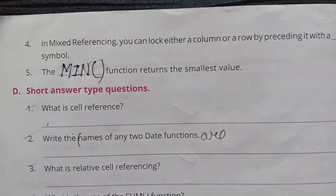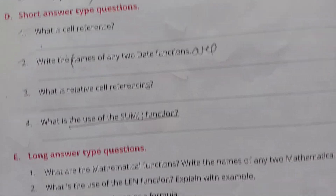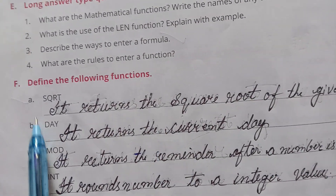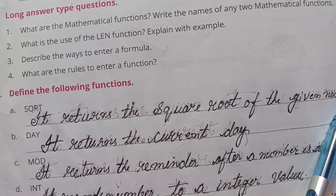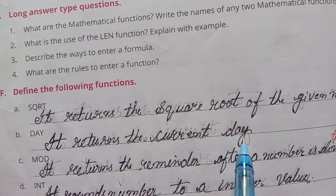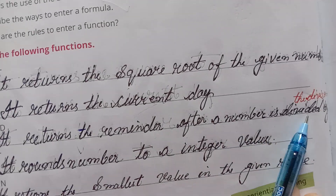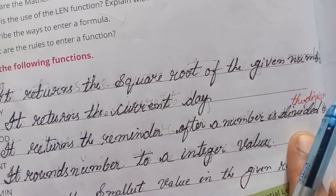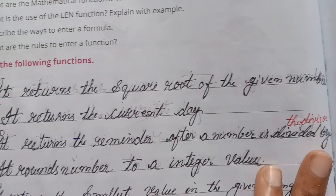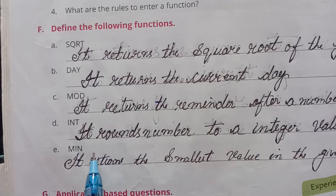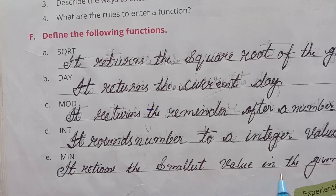Short answer type questions. I will solve these questions in a notebook. F. Define the following functions. SQRT: it returns the square root of the given number. DAY: it returns the current date. MOD: it returns the remainder after a number is divided by the divisor. INT: it rounds a number to an integer value. MIN: it returns the smallest value in the given range.